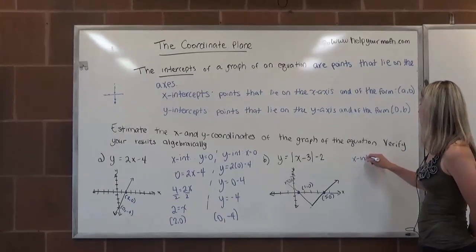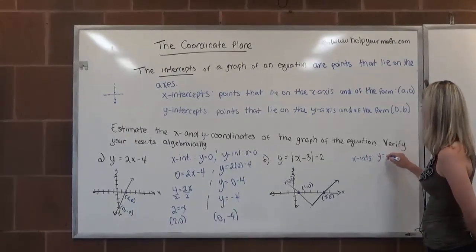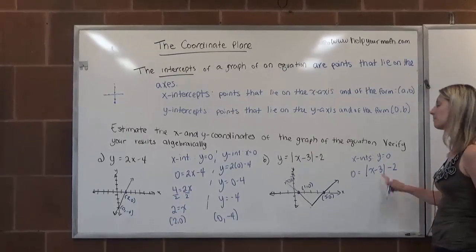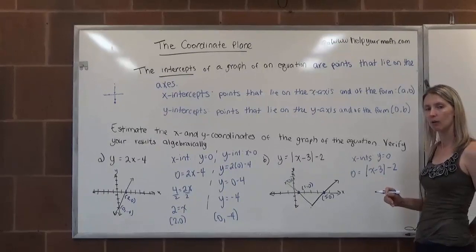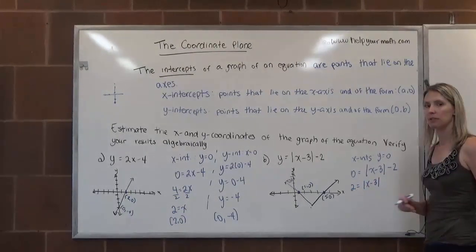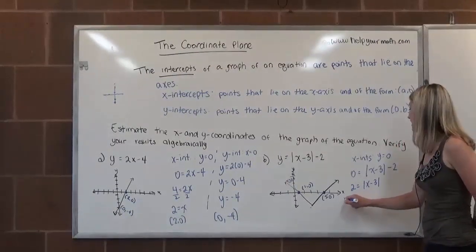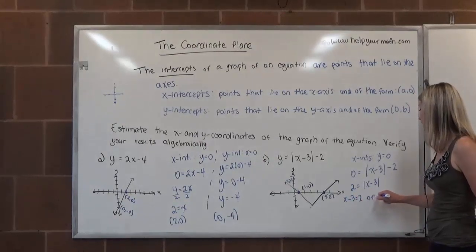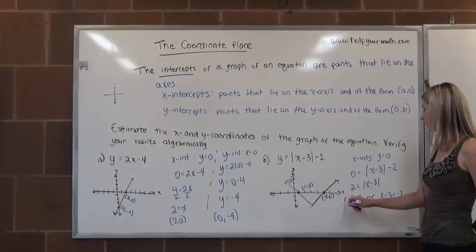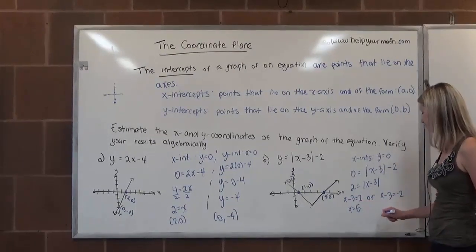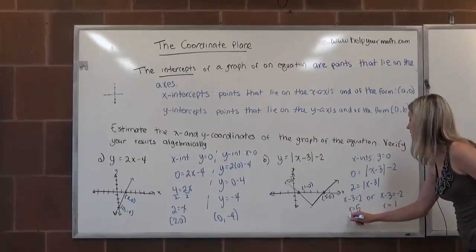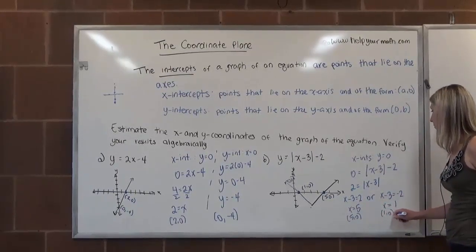To find the x-intercepts, we plug in 0 for y: 0 equals the absolute value of x minus 3, minus 2. First, get the absolute value by itself — add 2 to both sides to get 2 equals the absolute value of x minus 3. Since the absolute value equals a positive number, there are two cases. Inside the absolute value equals 2, or equals negative 2. Solving each case by adding 3 to both sides, we get x equals 5 and x equals 1 — those are our two x-intercepts at (5, 0) and (1, 0).